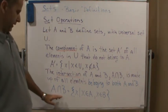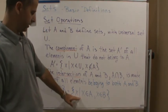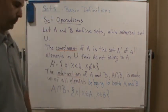So we write it mathematically. We say A intersect B is equal to the set of all X such that X is an element of A and X is an element of B.